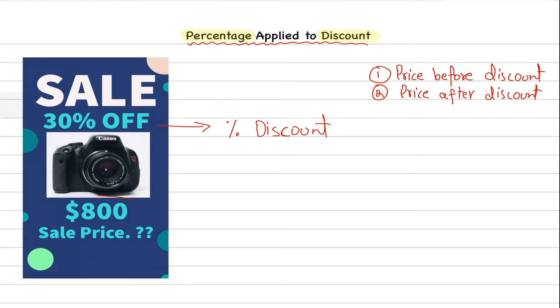In this case, this $800 is the price before the discount and we have to figure out the sale price, which means we have to work out the price after the discount, after 30% off is applied. If we're getting 30% off, that basically means the store is charging us 70%, meaning the price has been reduced by 30%.